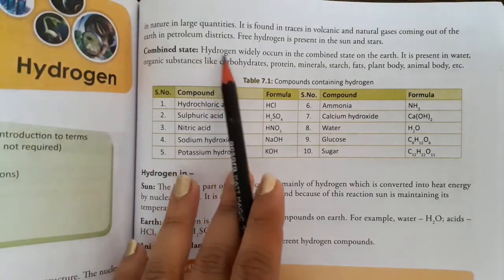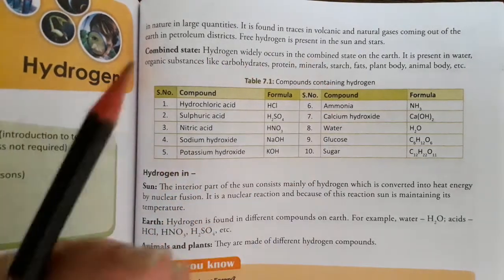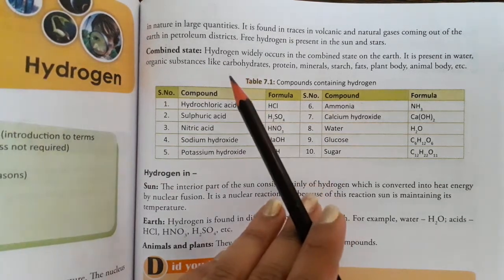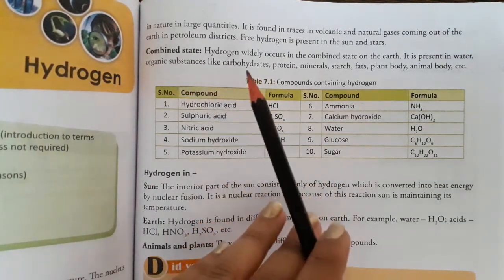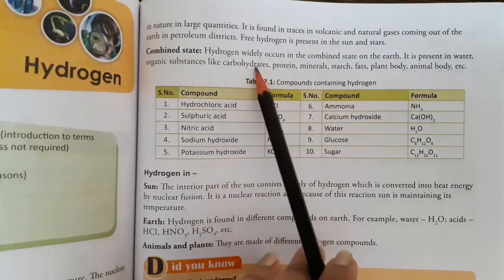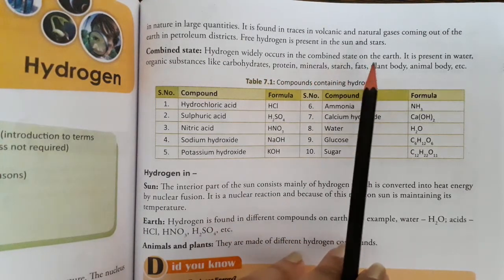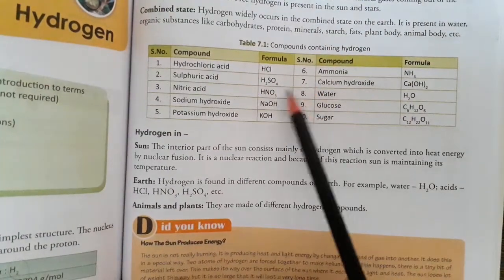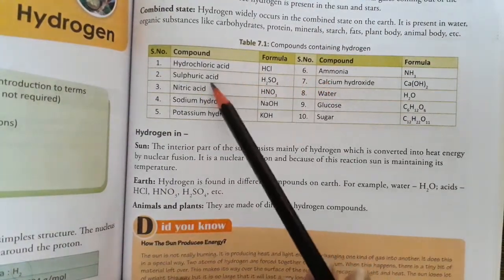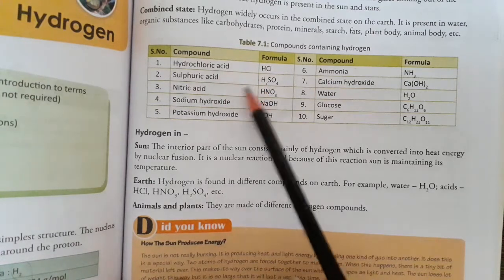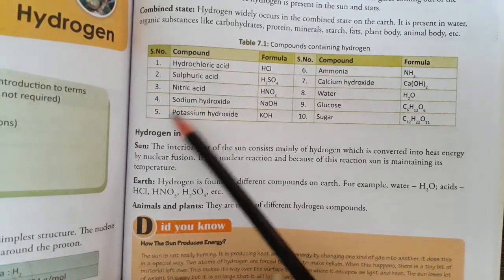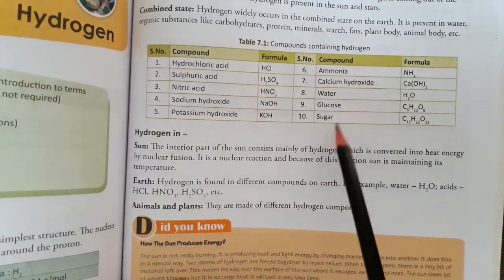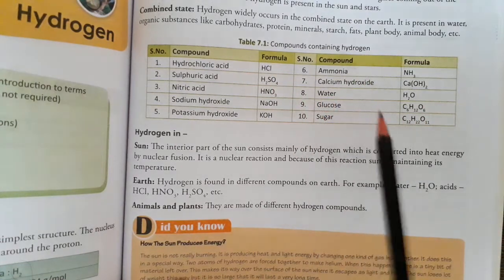If we talk about combined state, hydrogen widely occurs in the earth in combined state. It is present in water and organic substances such as carbohydrates, proteins, minerals, starch, fats, plant body, animal body, etc. Compounds containing hydrogen: hydrochloric acid, sulfuric acid, nitric acid, sodium hydroxide, potassium hydroxide, ammonia, water, glucose, sugar, calcium hydroxide. These all are the compounds which contain hydrogen.